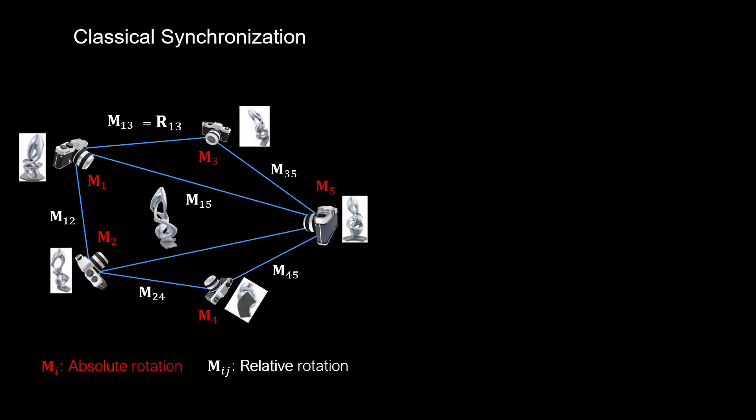In a classical scenario, each edge is associated with a relative rotation matrix. Synchronization solves for the absolute rotations, ensuring the cycle consistency of the full graph.